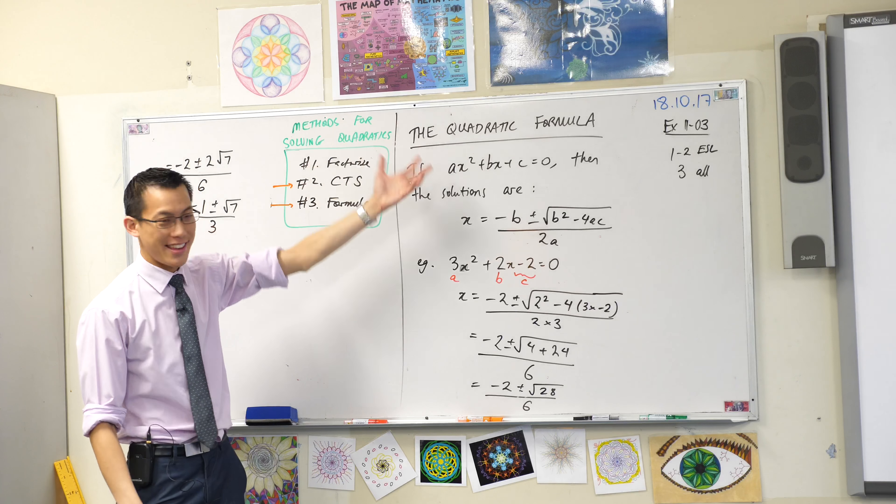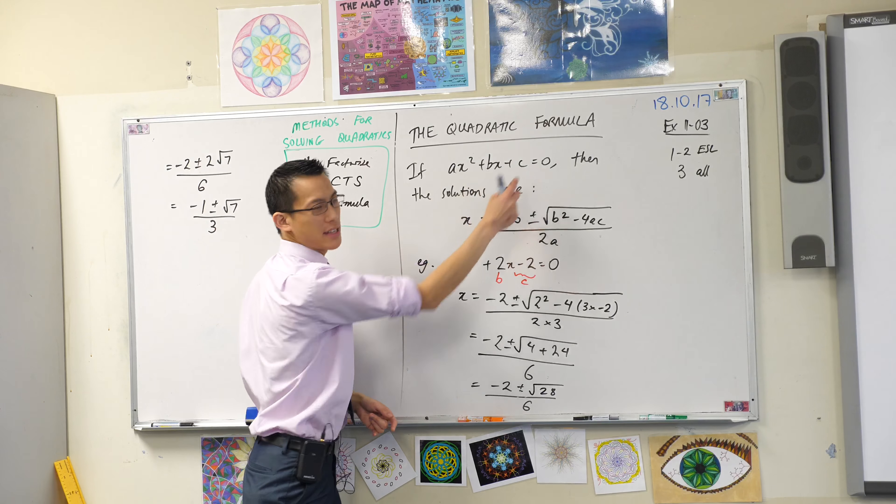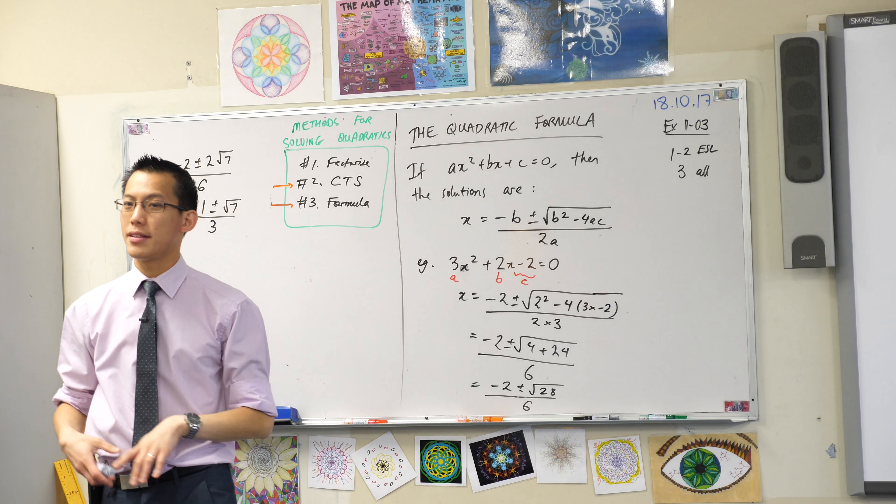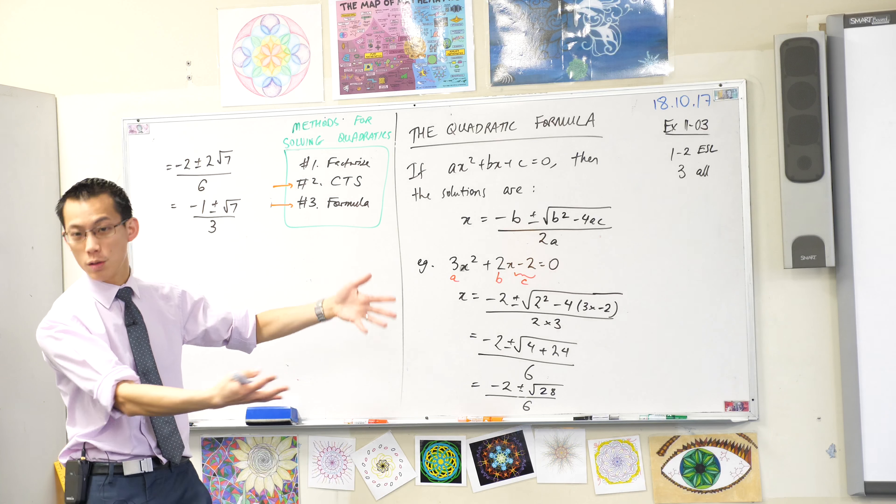You remember how we started and we said the key thing here is just work out what a, b, and c are and then you just slot them in and it all just sort of unfolds from there.